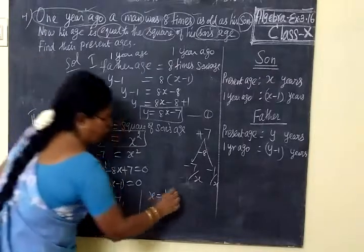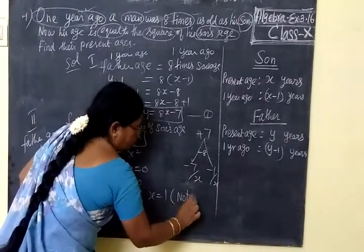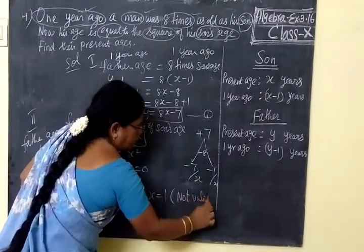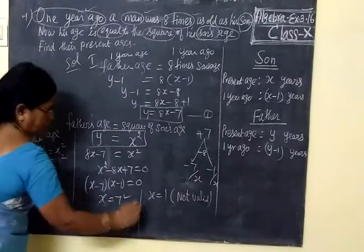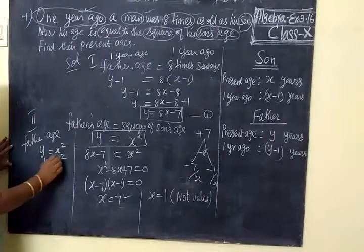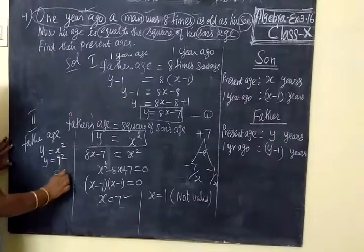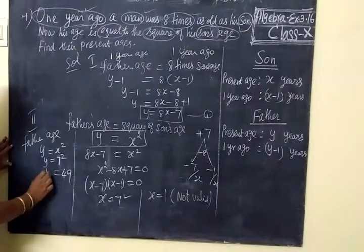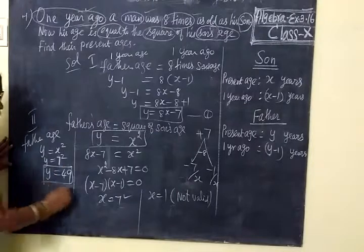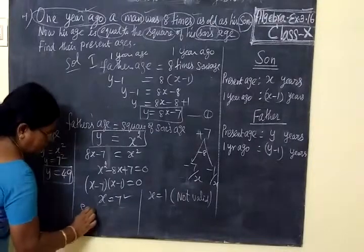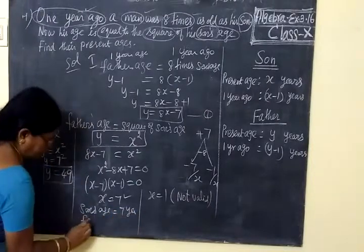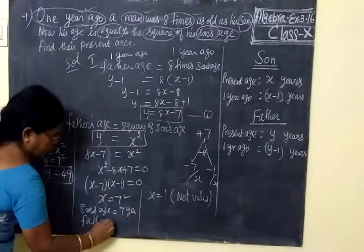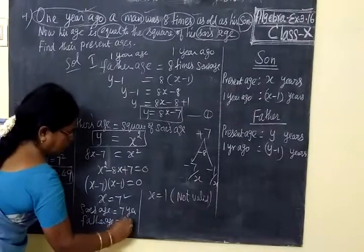This is not admissible. So we are taking x equal to 7. In the substitute, 7 squared equal to 49. So son's age, son is 7 years. Then father is 49 years.